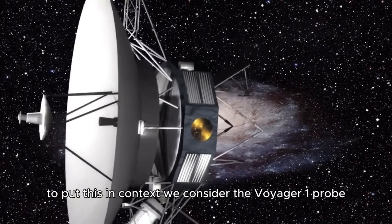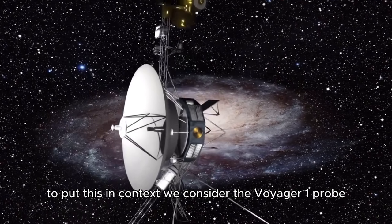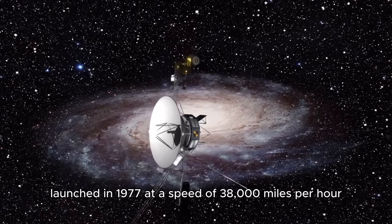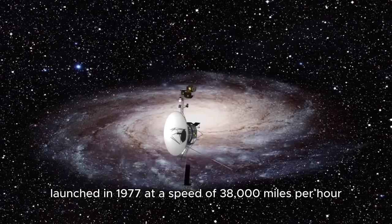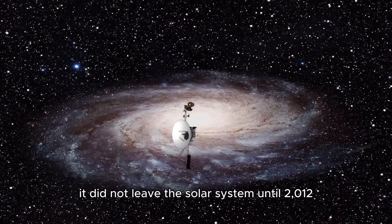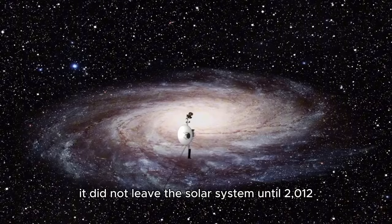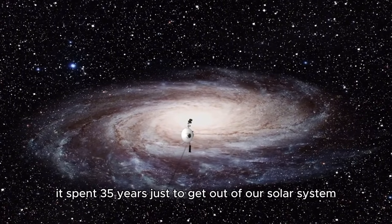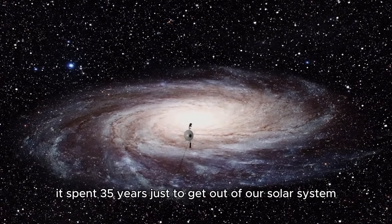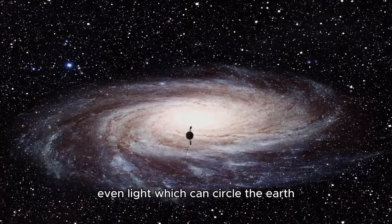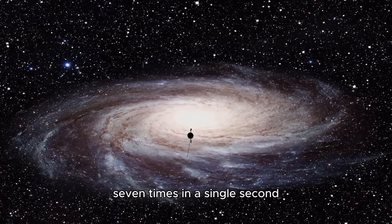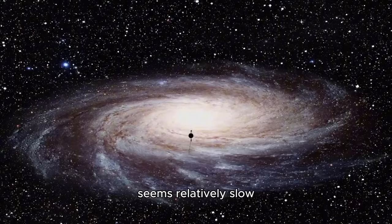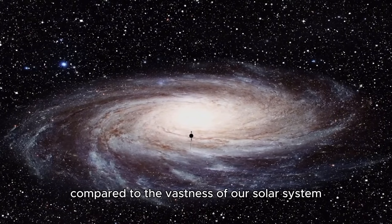These figures alone demonstrate the immense scale of our solar system. To put this in context, we consider the Voyager 1 probe, launched in 1977 at a speed of 38,000 miles per hour. It did not leave the solar system until 2012. This means it spent 35 years just to get out of our solar system. Even light, which can circle the Earth seven times in a single second, seems relatively slow compared to the vastness of our solar system.